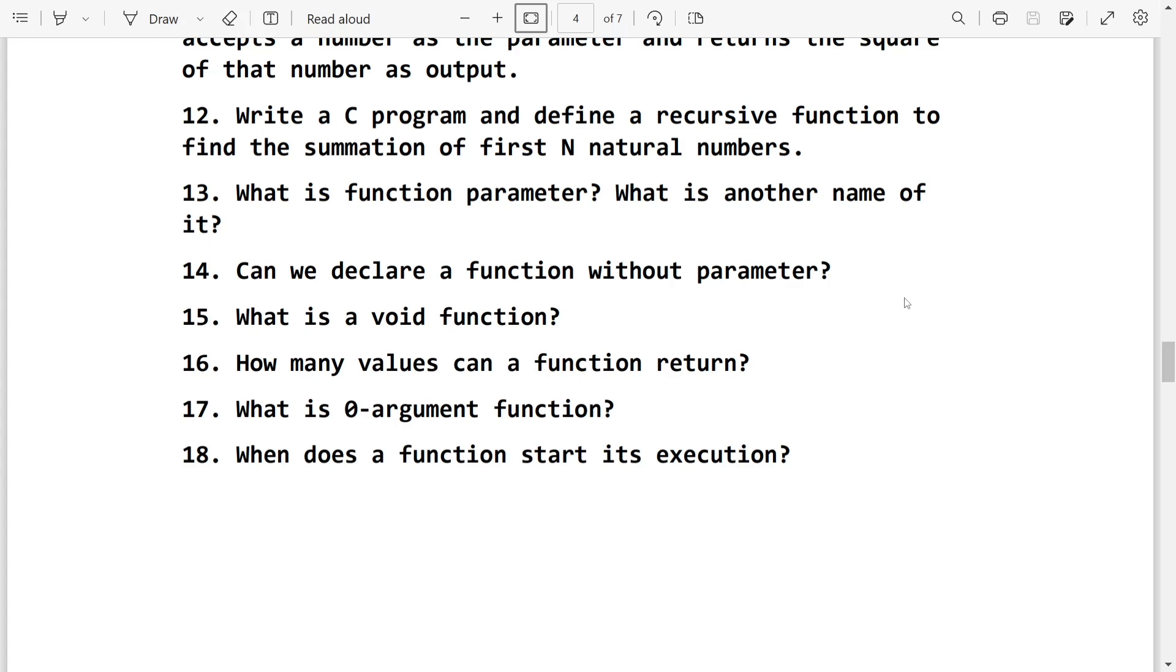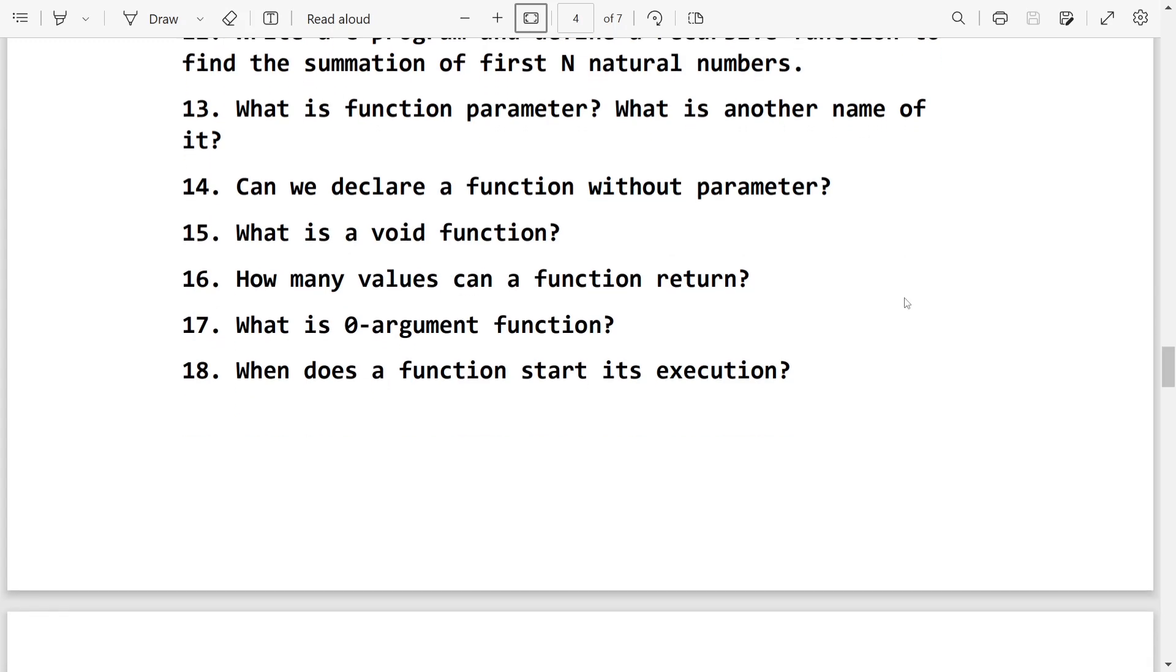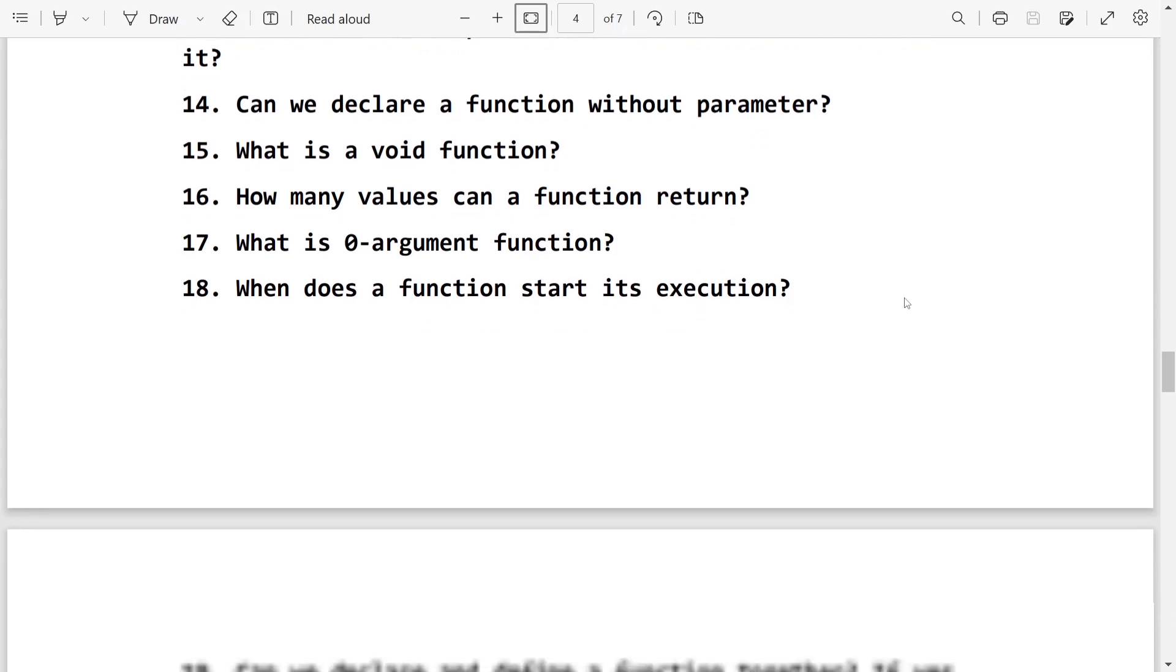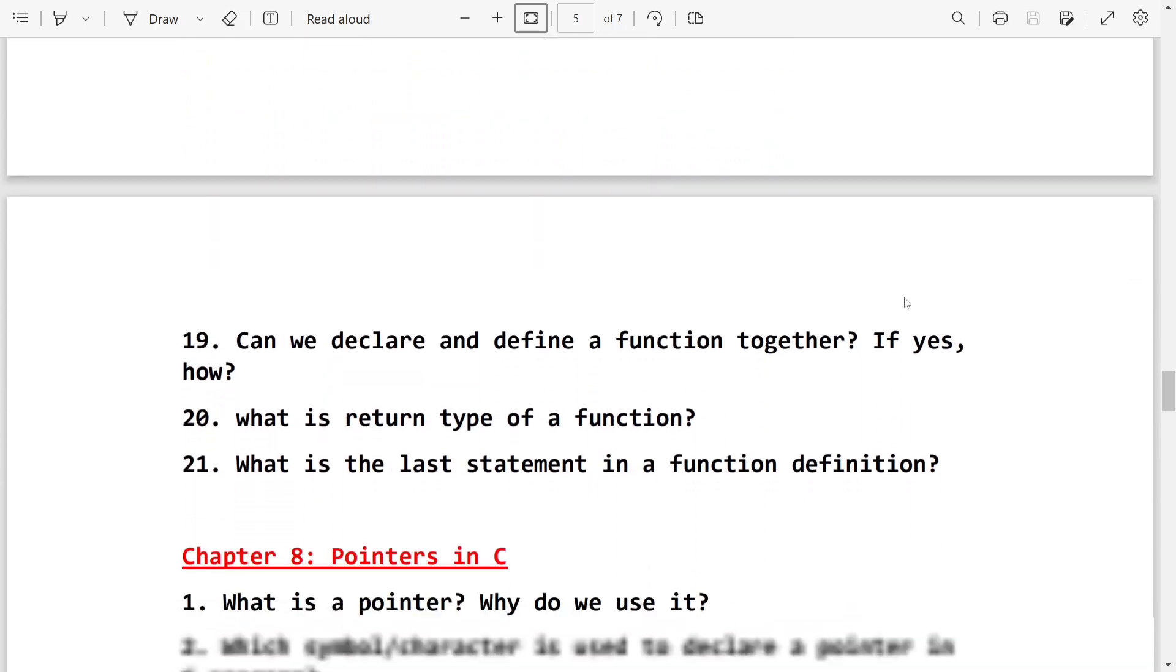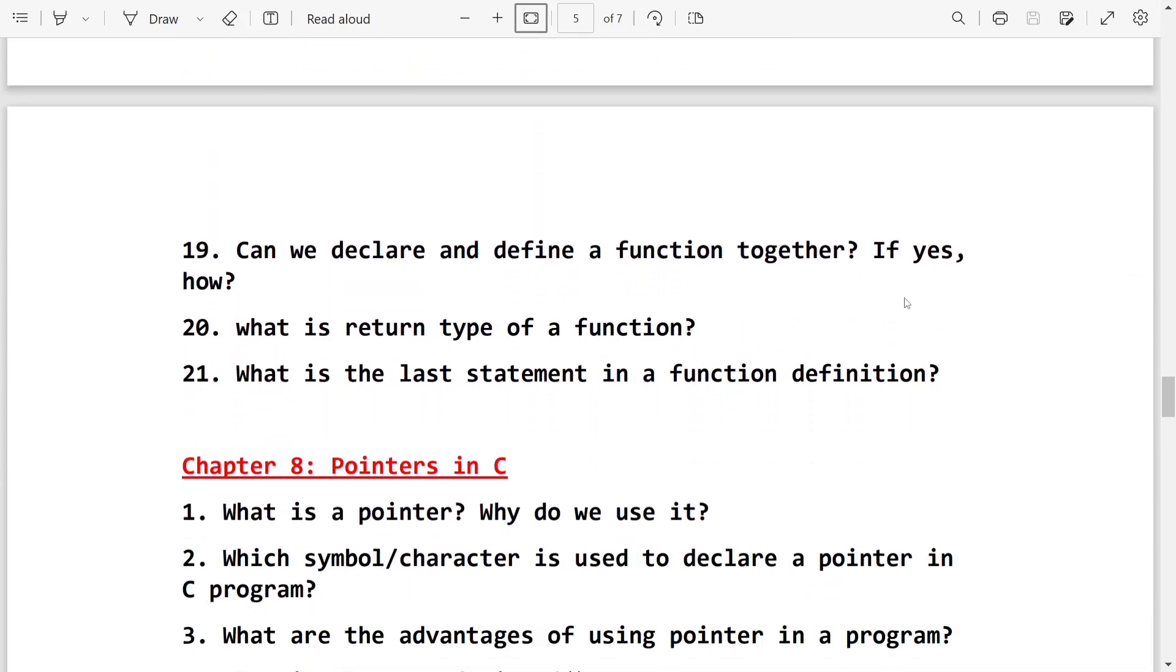Then what is zero argument function. When the function doesn't have any parameter or when the function doesn't have any argument, it is known as zero argument function. When does a function start its execution. When we call the function. Then can we declare and define a function together. Yes.